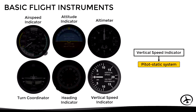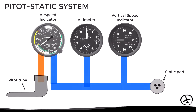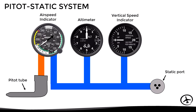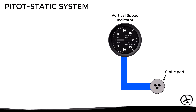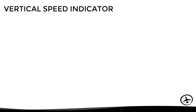Here we have a typical pitot-static system schematic. As we can see, the vertical speed indicator is connected only to the static port, which means that it receives static pressure information only.